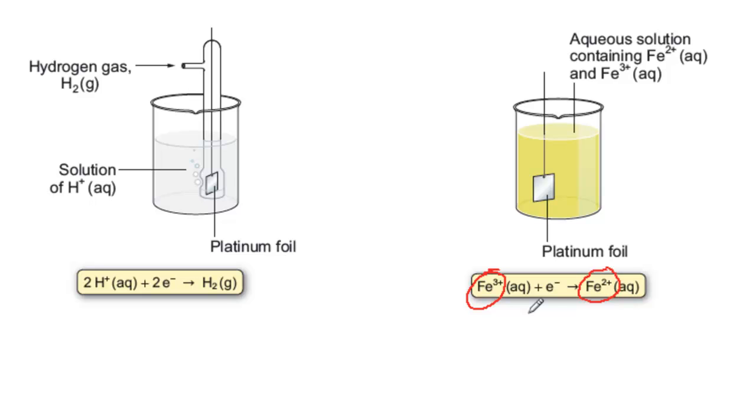The only snag is that we've got to find a way of collecting those electrons. So what you have is a piece of platinum foil, which is in contact with the Fe3+ and Fe2+ ions in solution, and it acts as a conductor for the electrons, which can then flow along a wire.